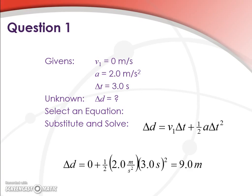Δd equals v₁Δt plus one-half acceleration times Δt squared. Substitute in, and we get zero for our v₁ plus a half, 2 meters per second squared times 3 seconds squared. Cancel our units and get meters, 9 meters.